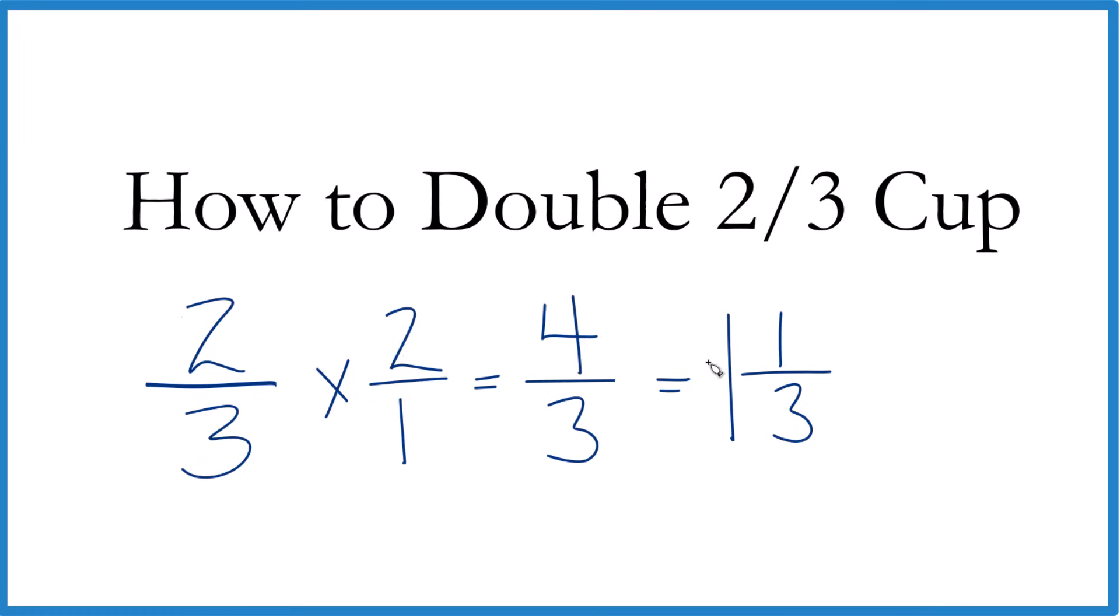So four-thirds cups, same thing as one and one-third cup. So when you double two-thirds of a cup, you end up with one and one-third cups. This is Dr. B.